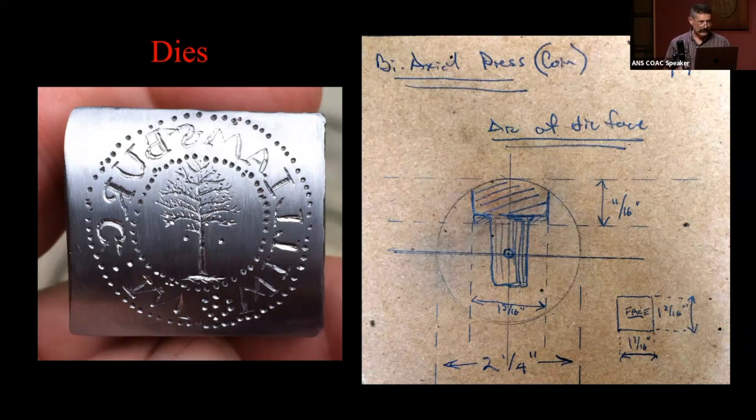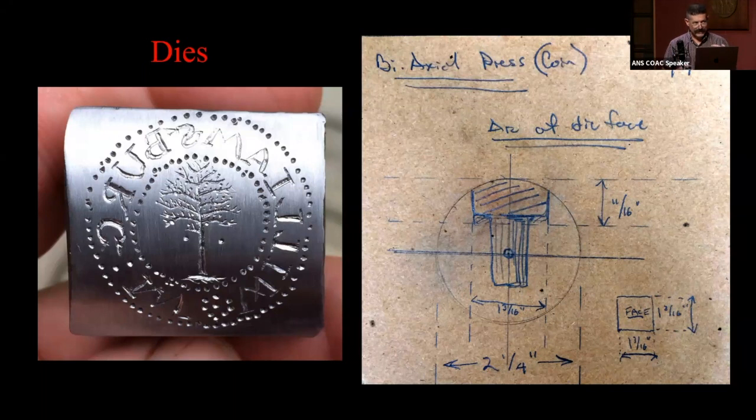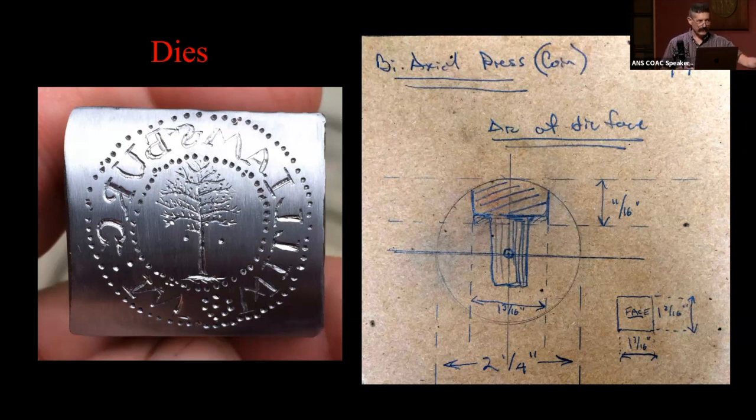To harden steel, to heat treat it, you have to get it super, super hot. Not necessarily glowing, but well north of 700 or 800 degrees, and then you quench it.